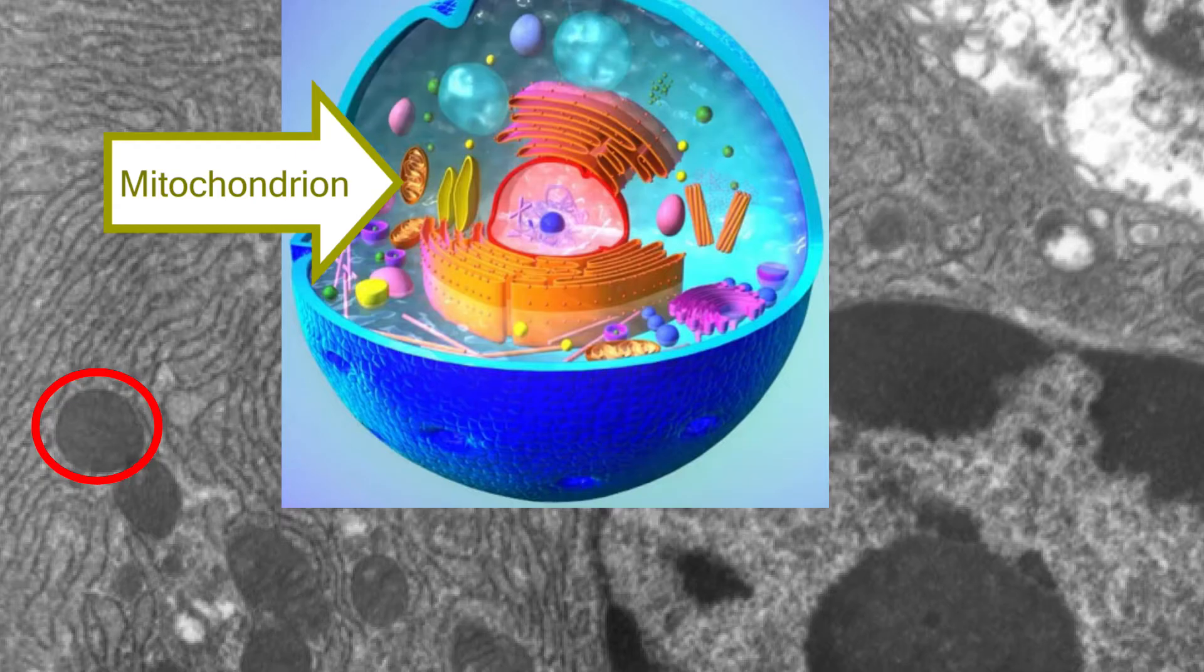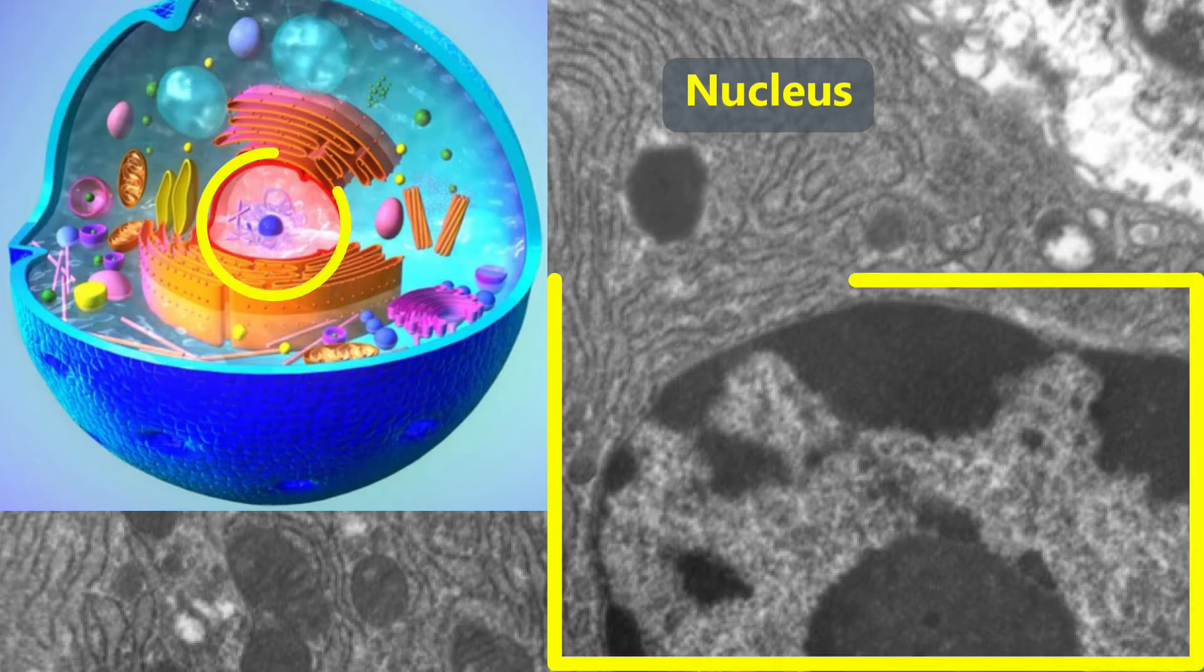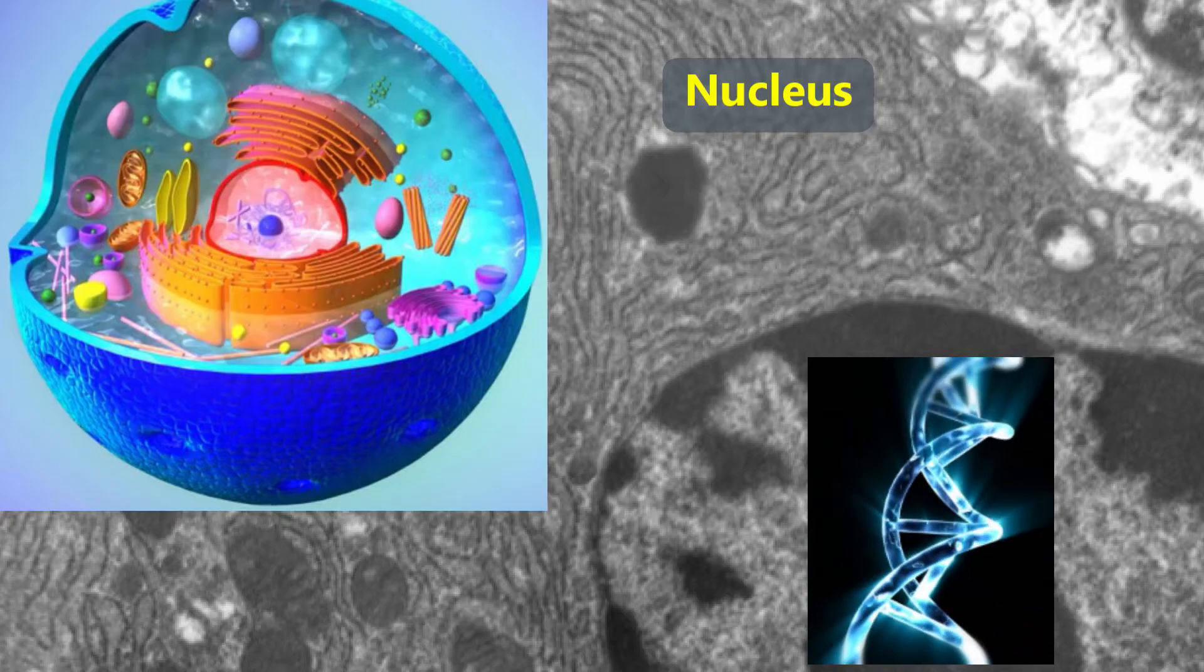These organelles are called mitochondria. They're involved in converting sugar into an energy form that the cell can use. We often call mitochondria the cell's powerhouse. Near the center of the cell is the nucleus. That's where DNA is stored. DNA is the blueprint that is used to design the cell's parts.